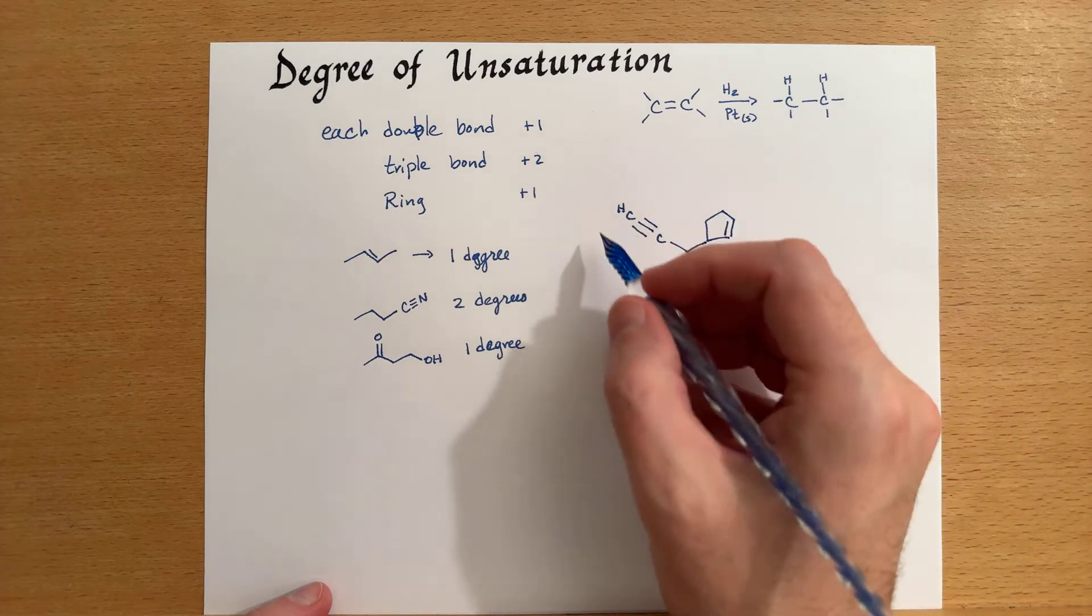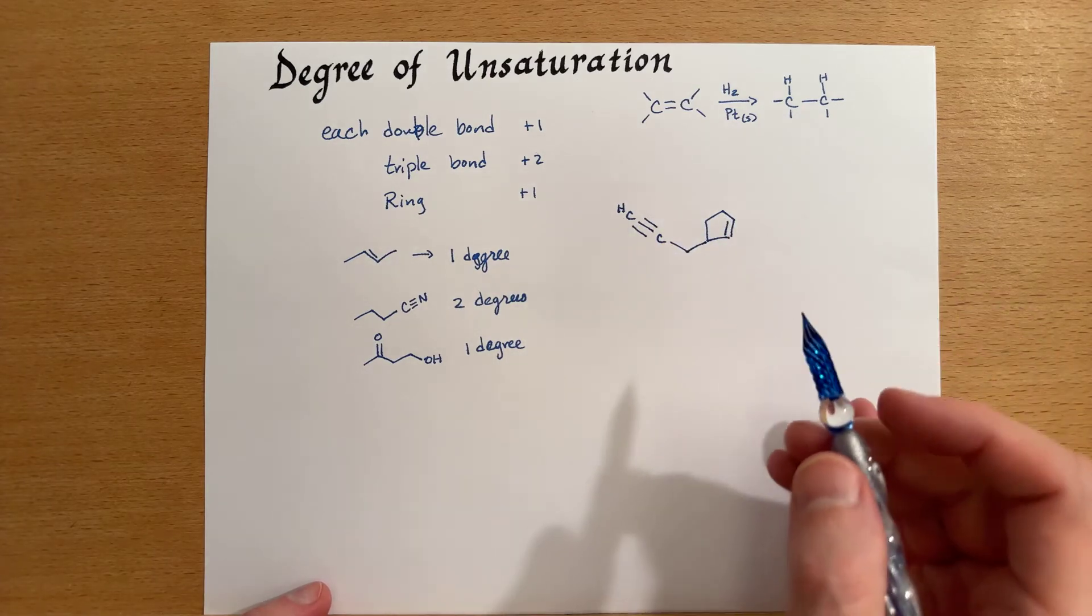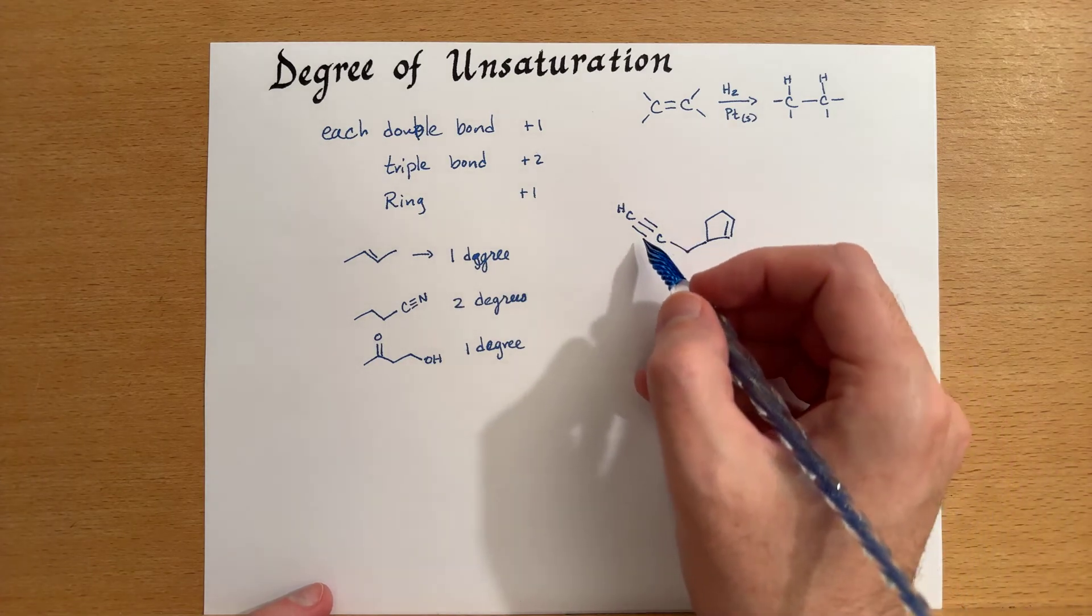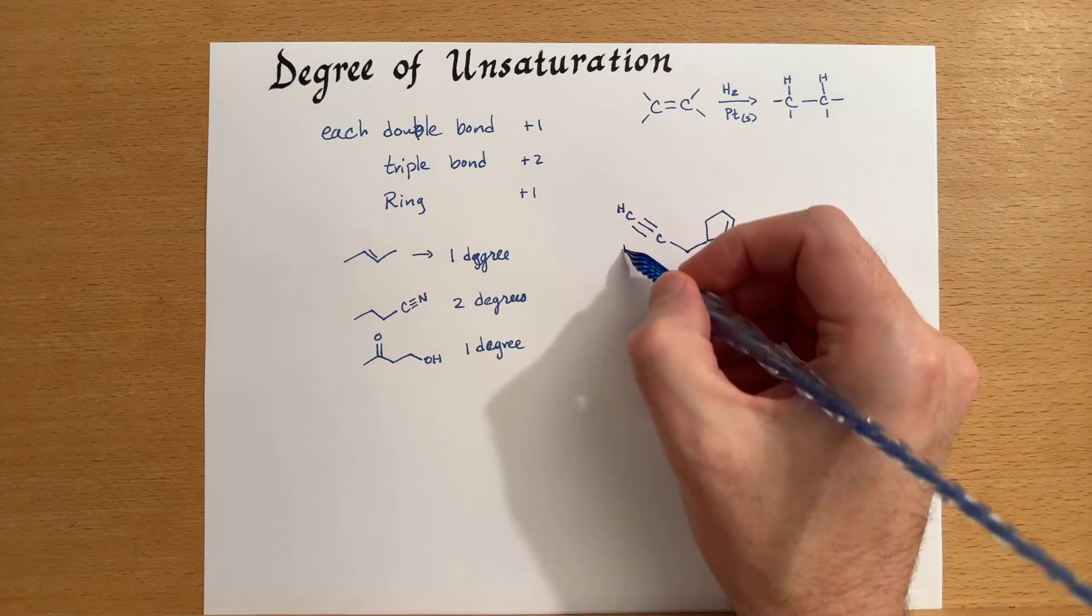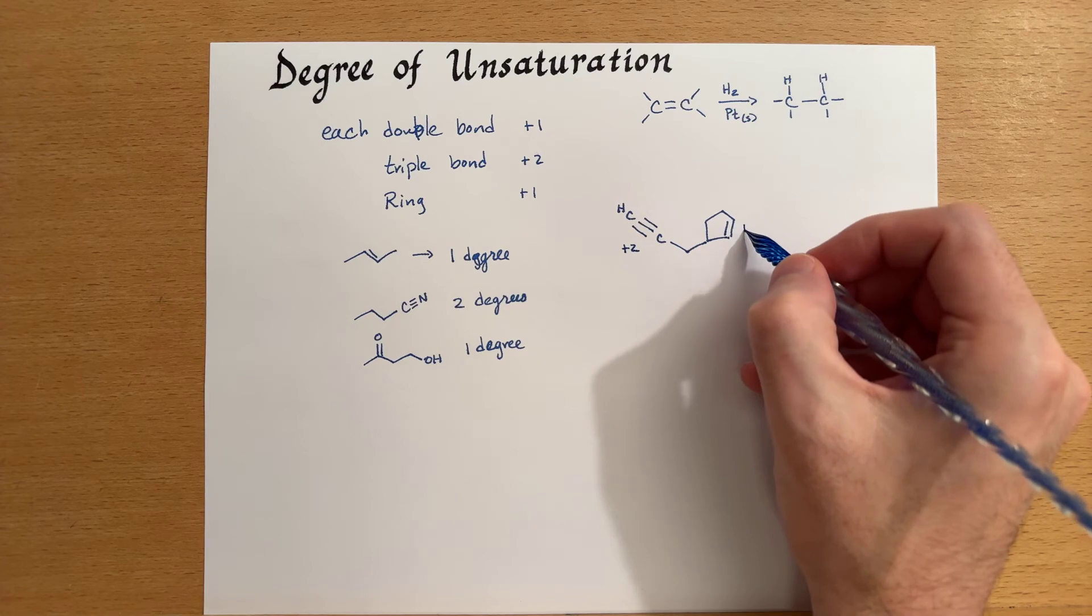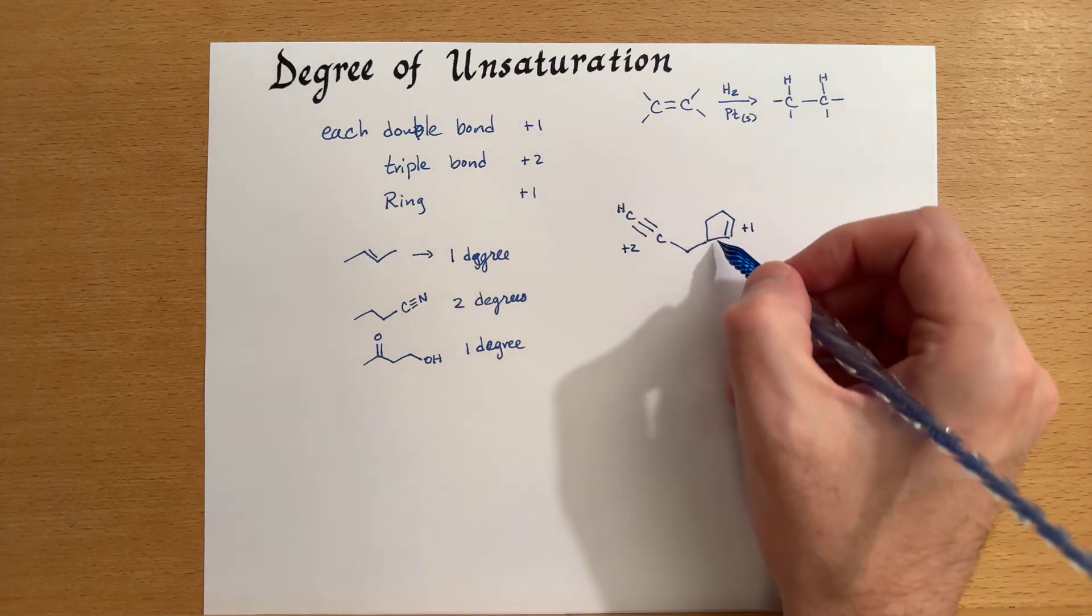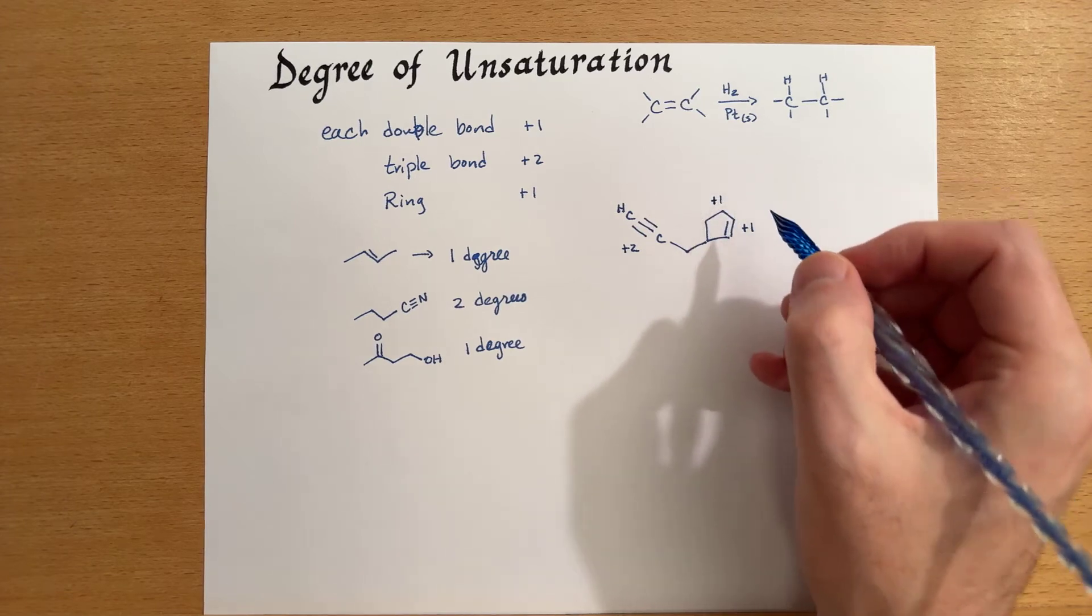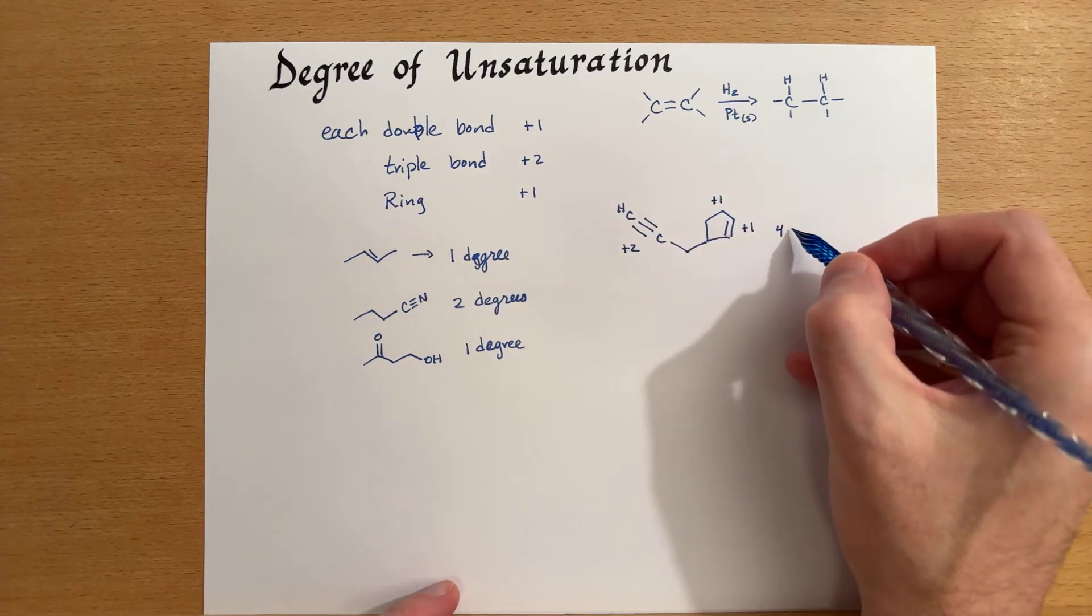So if we look at this example, we have several areas of unsaturation on this molecule. First, we can start with the carbon-carbon triple bond, which is plus two. We have a double bond here, and that's plus one. And we also have a ring. So that's another plus one. So this entire molecule has four degrees.